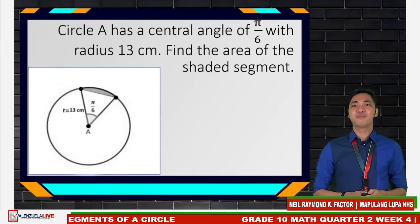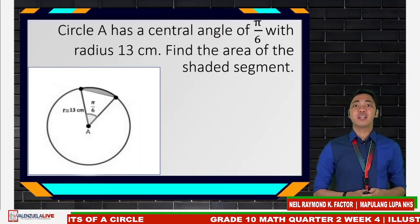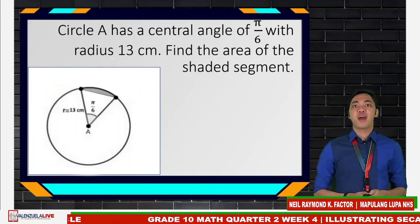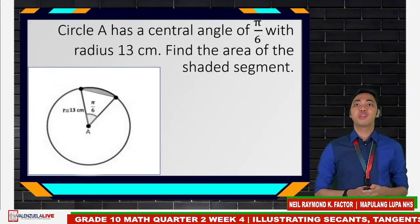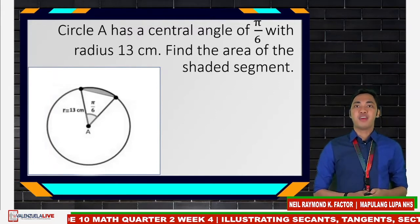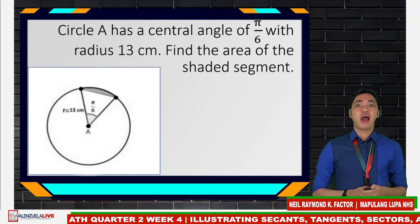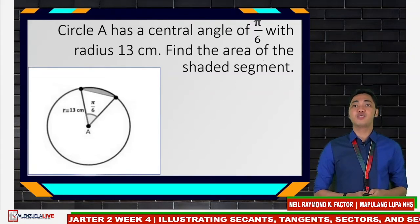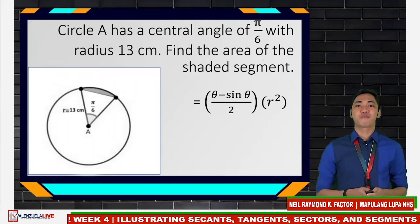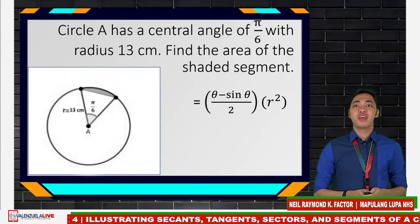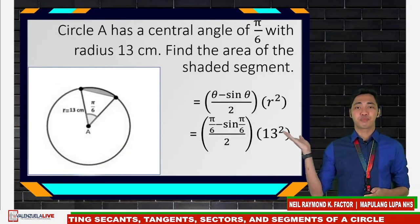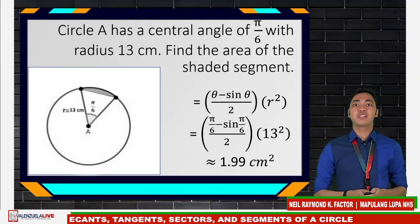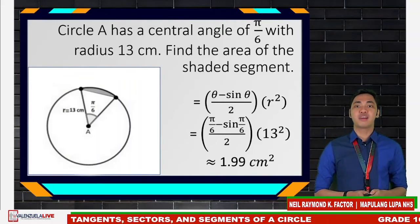Let's have another example. Circle A has a central angle of pi over 6 with radius 13 centimeters. Find the area of the shaded segment. Our theta is in radians — pi over 6 — so we use the radian formula. Substituting theta = pi over 6 and radius = 13, the result is approximately 1.99 square centimeters.